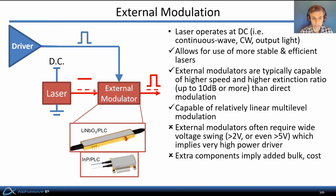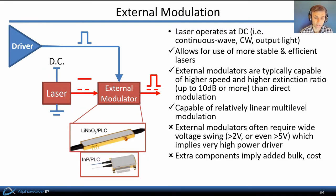External modulation operates by biasing a laser at DC so that it continuously produces output light. A transmit driver then drives a relatively wide swing signal into an external modulator. External modulators are typically capable of higher speeds and higher extinction ratios than direct modulation, and they can be linearly modulated to produce multi-level signals like 4-PAM waveforms. The drawbacks are that external modulators often require a very wide voltage swing — over 2 volts typically, sometimes more than 5 volts — implying a very high power driver. So although the higher extinction ratio suggests good efficiency, the transmit driver may consume significantly more power, and the additional external components also imply added size and cost.